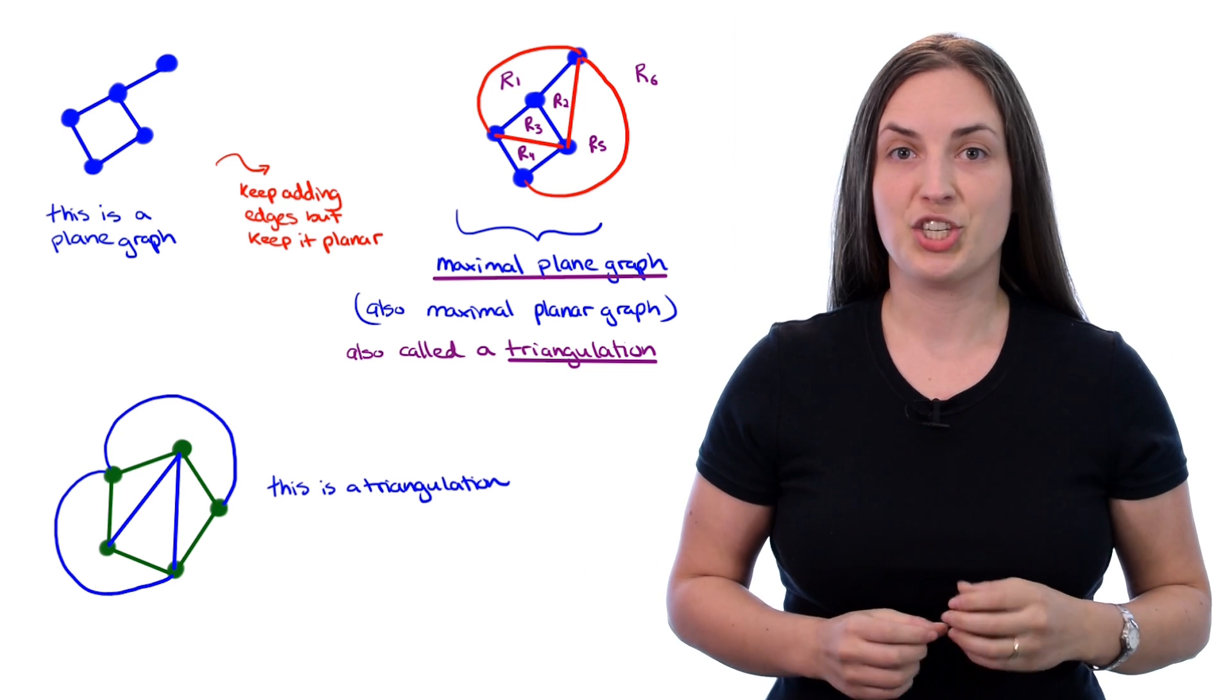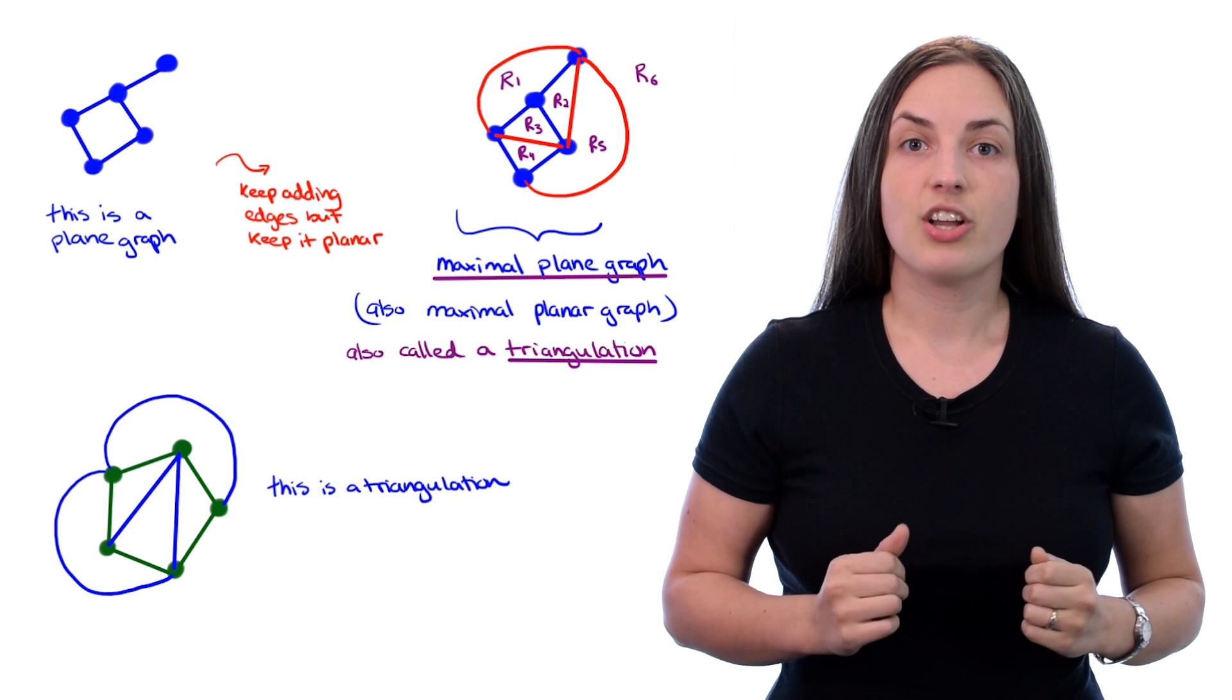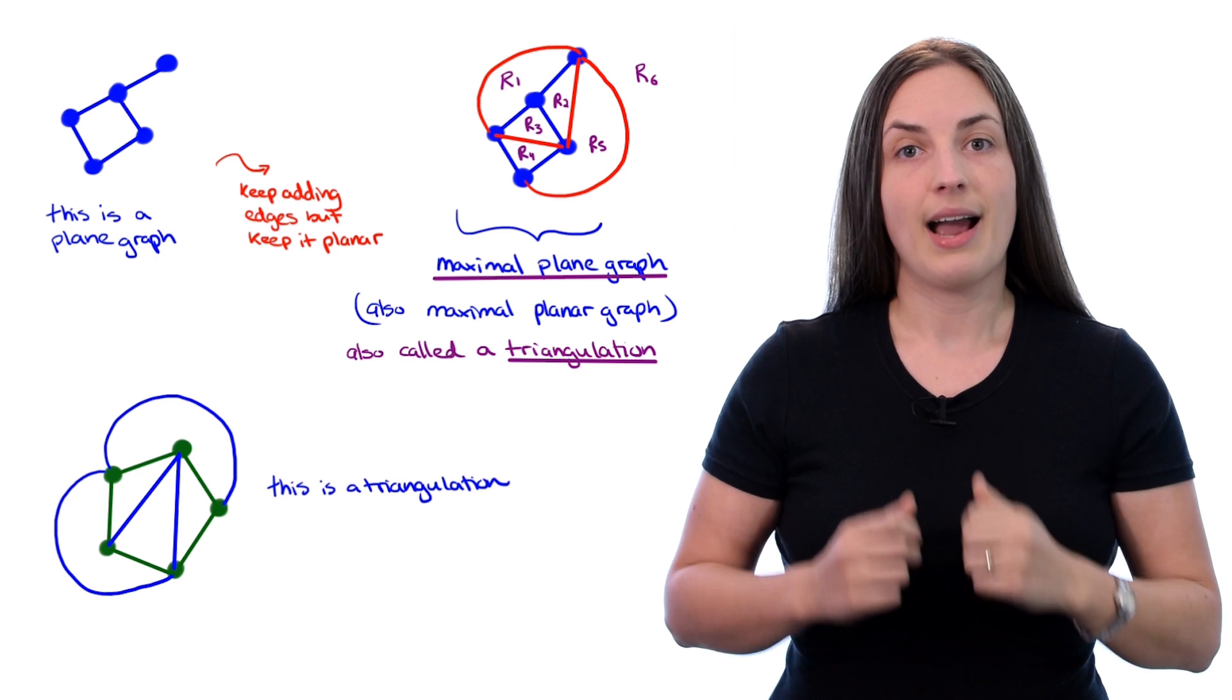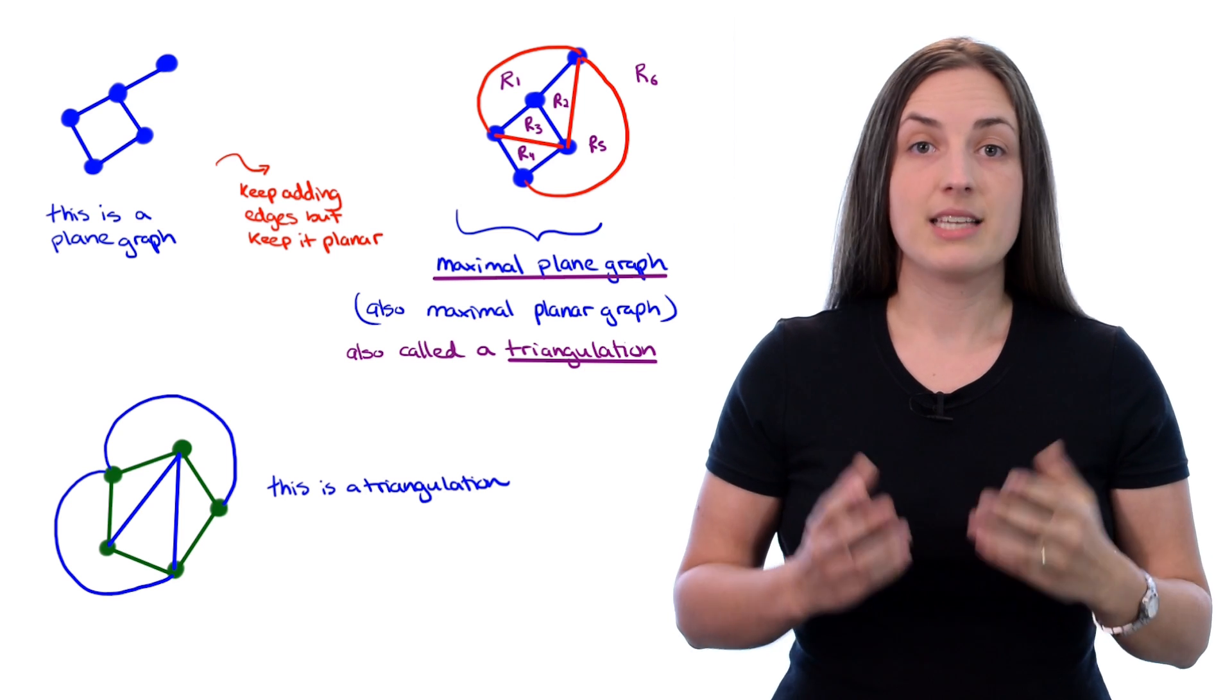I'm not making this prediction using any magic. I actually know that for a maximal plane graph, there is a direct formula telling you how many edges it will have based on the number of vertices. So, let's take a look at that theorem.